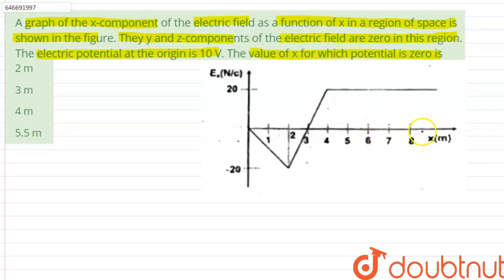Let us assume some point here and call it capital X. Since you know that the electric potential, which can be denoted by V, is given by the negative of area of E and x graph.